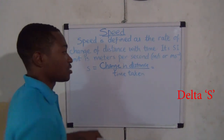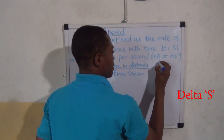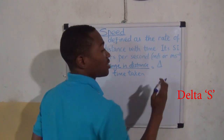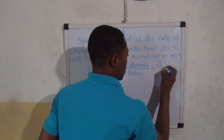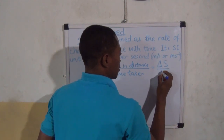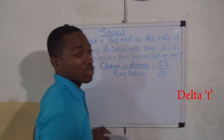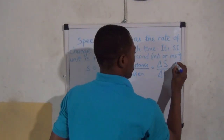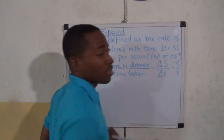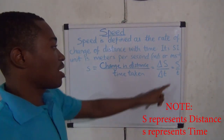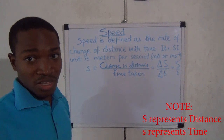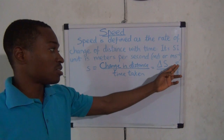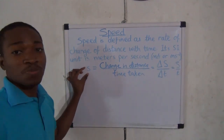What is the symbol for change in distance? Delta S. Capital letter S represents distance, and delta T represents change in time. So speed equals change in distance divided by change in time. Take note: capital letter S represents distance, and small letter s represents speed.